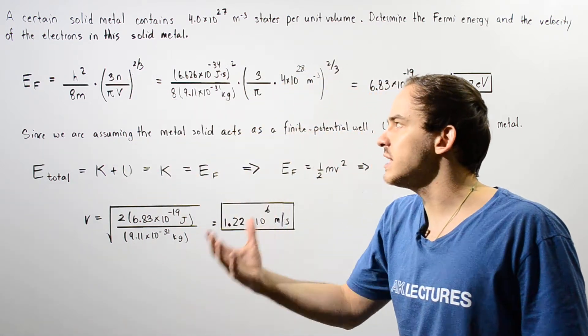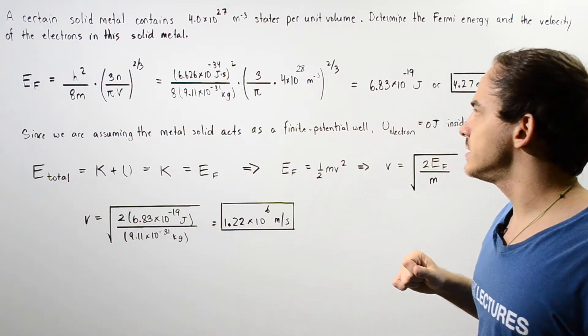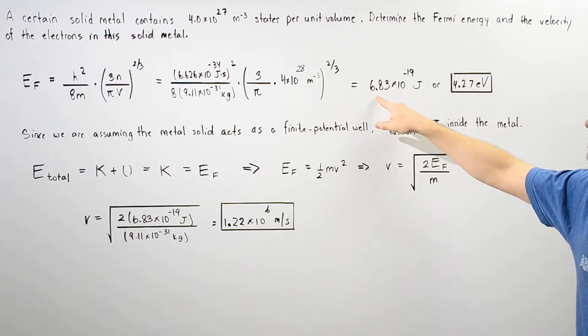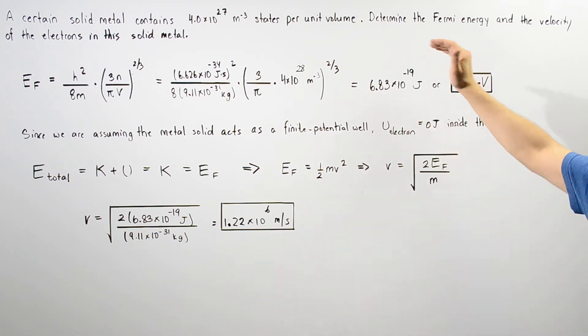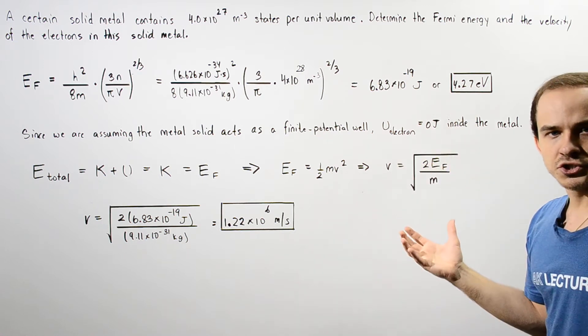We get about 6.83 times 10 to negative 19 joules. So this is our energy given in joules. We can convert this into electron volts by dividing this by 1.6 times 10 to negative 19 joules divided by electron volts.